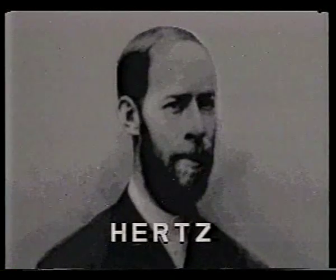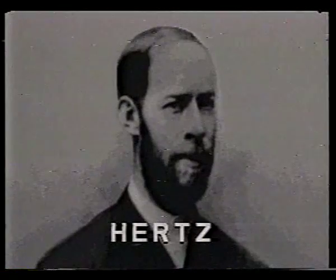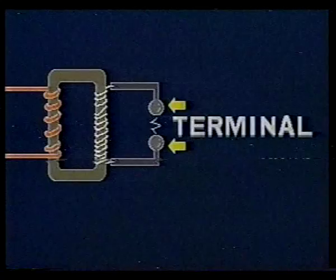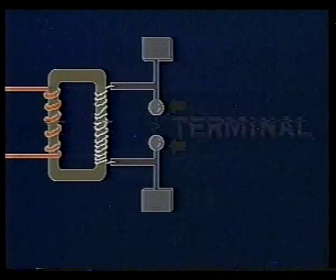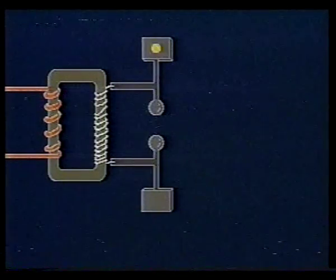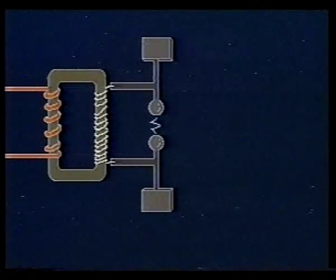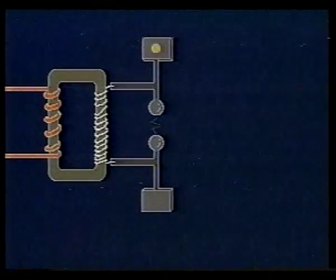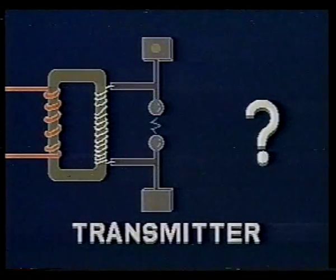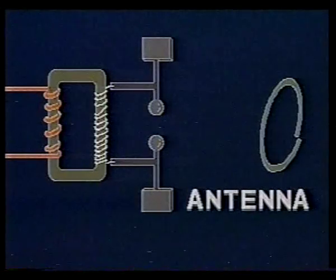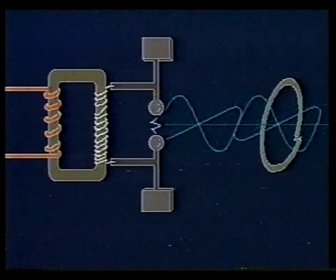Heinrich Hertz set out deliberately to find physical evidence of Maxwell's electromagnetic waves. He built an apparatus using a transformer to increase voltage, and produced a spark between two terminals. This spark caused a charge to oscillate backwards and forwards between two plates attached to the terminals. To detect the waves, Hertz tried many devices, including a single wire loop with a small gap in it. He placed this antenna near his transmitter and was able to observe tiny sparks jumping the gap in the antenna — clear evidence that the loop had absorbed some of the energy emitted by the transmitter.